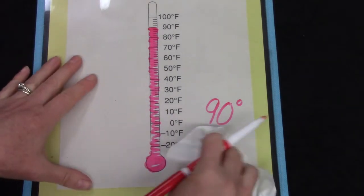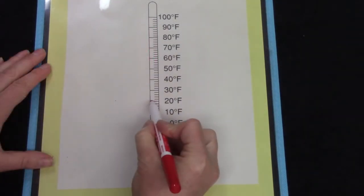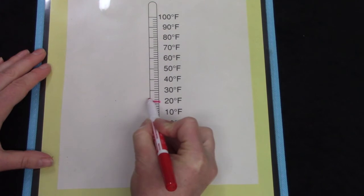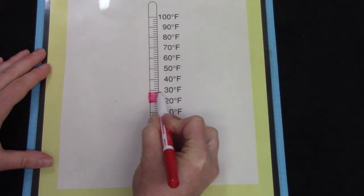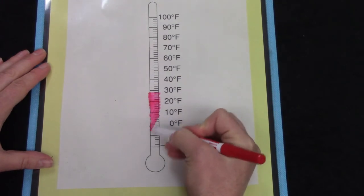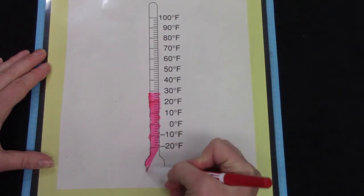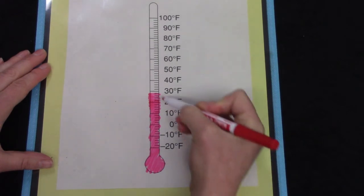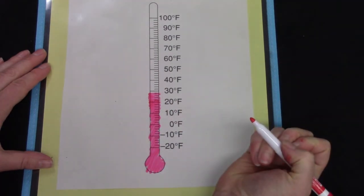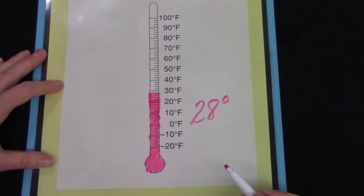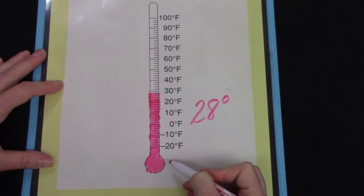Well, what about 28? Here's 20. 22, 24, 26, 28. Yes, 28 is so close to 30. There's just one more line. I would love for you to practice on a thermometer today.